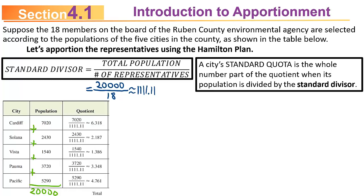For each city, divide the population by the standard divisor: Cardiff gets 6.318, Solana gets 2.187, Vista gets 1.386, Palma gets 3.348, and Pacific gets 4.761. Rounding down to get the standard quotas: Cardiff 6, Solana 2, Vista 1, Palma 3, Pacific 4. Adding those up, you've only apportioned 16 seats.